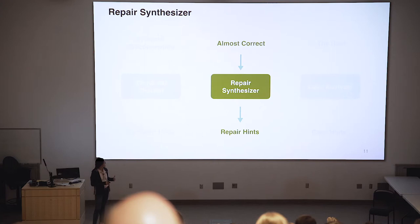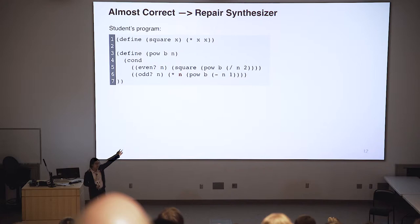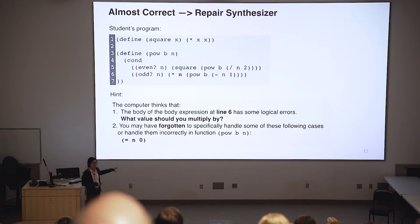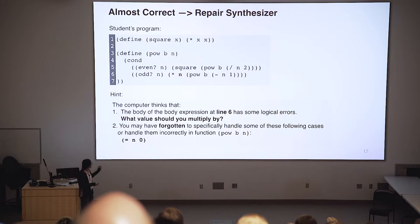The second category is programs that are almost correct. Here is a student program with two mistakes. First, there's a variable N in dark red that should actually be multiplied by B instead of N. Also, the student missed a base case. The hint generated by our system first points out: look at the body expression at line six — what value should you multiply by? It tells the student there might be some mistake there but doesn't give away the answer. Second, it tells the student that you may have forgotten to handle the case where N equals zero, but doesn't tell them what value they should return.